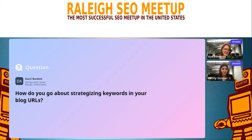So how do you go about strategizing keywords and blog URLs? Usually I'll try to include the primary keyword in the URL, keeping in mind URL length. That's usually the way I go about doing that. And of course, keeping in mind the forward slash if it's present or if it's not, so we don't create an accidental redirect for the client.